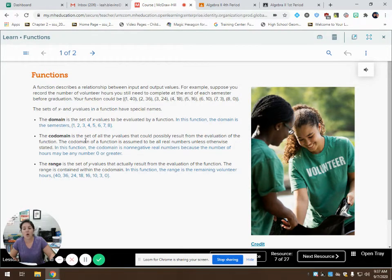The codomain is the set of all the y values that could possibly result from the evaluation of a function. The codomain of a function is assumed to be all real numbers unless it states otherwise in the problem. So in this function, the codomain is going to be non-negative numbers because my hours, I can't have negative hours. That doesn't even make sense. So my codomain is going to be all positive numbers.